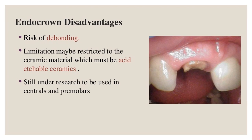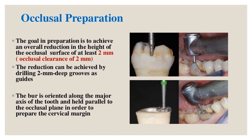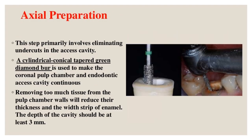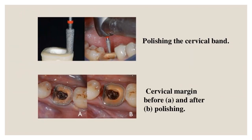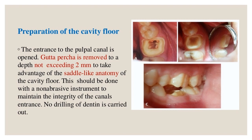Endocrown occlusal preparation: the goal is to achieve an overall reduction in the height of the occlusal surface of at least 2 millimeters. Two mm deep grooves are drilled as guides; the bur is oriented along the major axis of the tooth and held parallel to the occlusal plane. Axial preparation primarily involves eliminating undercuts in the access cavity using a cylindrical conical tapered green diamond bur to make the coronal pulp chamber and endodontic access cavity continuous. The depth of the cavity should be at least 3 millimeters.